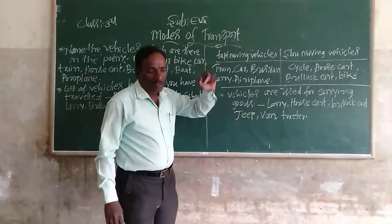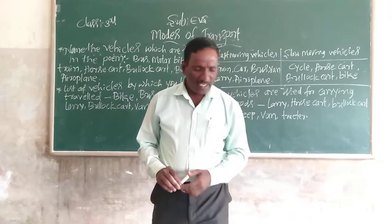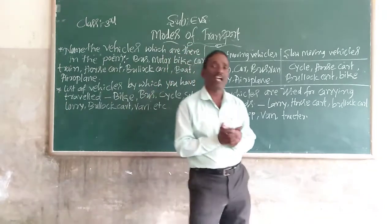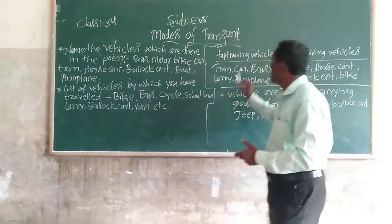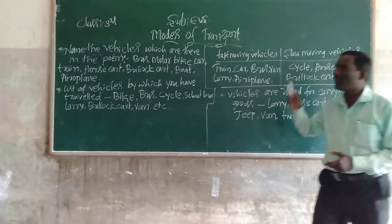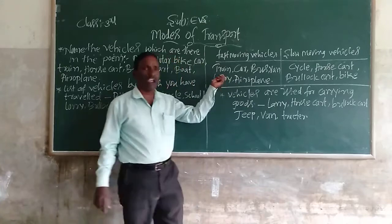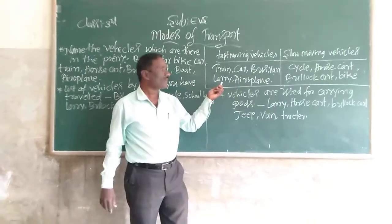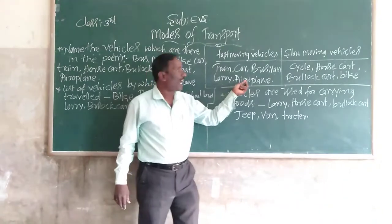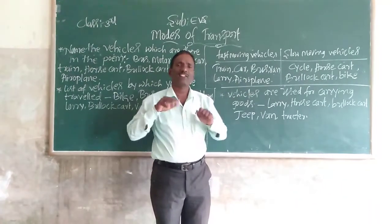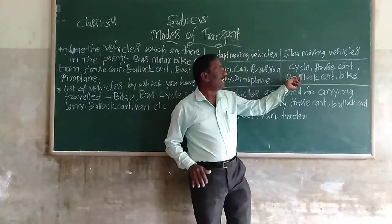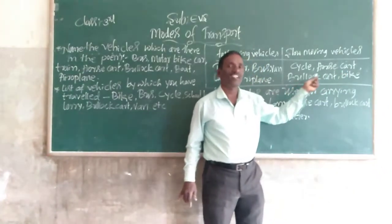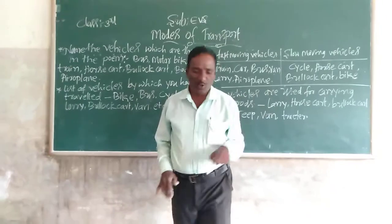Make a list of vehicles in which you have travelled and classify the vehicles listed by you into fast-moving vehicles and slow-moving vehicles. Fast-moving vehicles: train is very fast, and also car, bus, aeroplane. Slow-moving vehicles — these vehicles are very slow — for example cycle, bullock cart, and bike. These are the slow-moving vehicles.